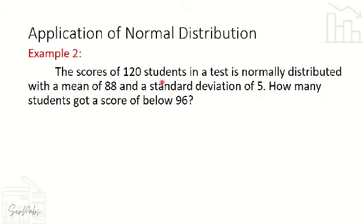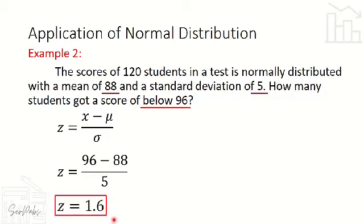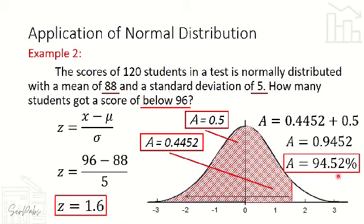Example 2: The scores of 120 students in a test are normally distributed with a mean of 88 and a standard deviation of 5 — same data as Example 1, but the question changes. Instead of a percentage, the question is: how many students got a score below 96? Converting 96 to a z-score: (96 - 88) / 5 = 1.6, so the area is still 94.52%.